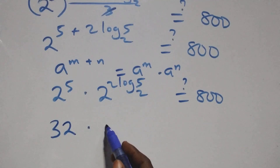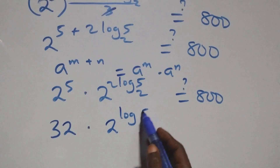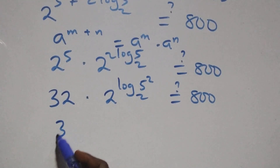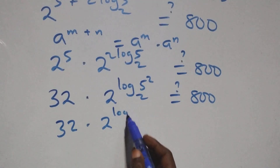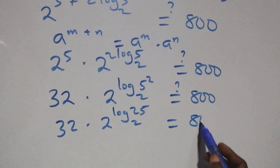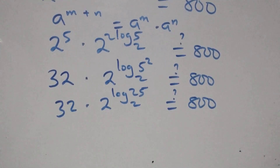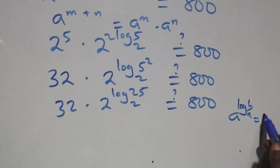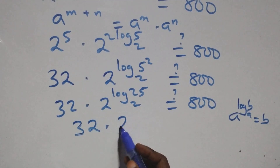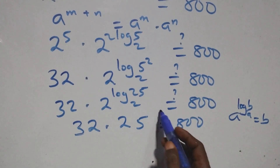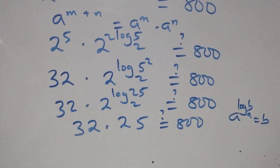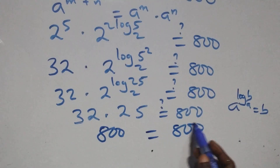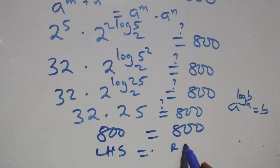We have 32 times 2 raised to power (2 log 5 base 2) — is it equals to 800? And of course, 2 raised to power (2 log 5 base 2) equals 25, so 32 times 25 equals 800, which is equals to 800. Left hand side equals right hand side — verified!